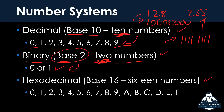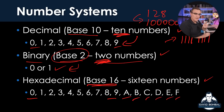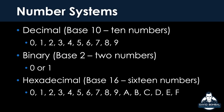Hexadecimal has 16 numbers, so it has more numbers than decimal. We have numbers zero all the way to nine, similar to decimal, but then we have A, B, C, D, E, and F. So once again, we have three numbering systems: decimal which has 10 numbers, binary which has two numbers, and hexadecimal which has 16 numbers.